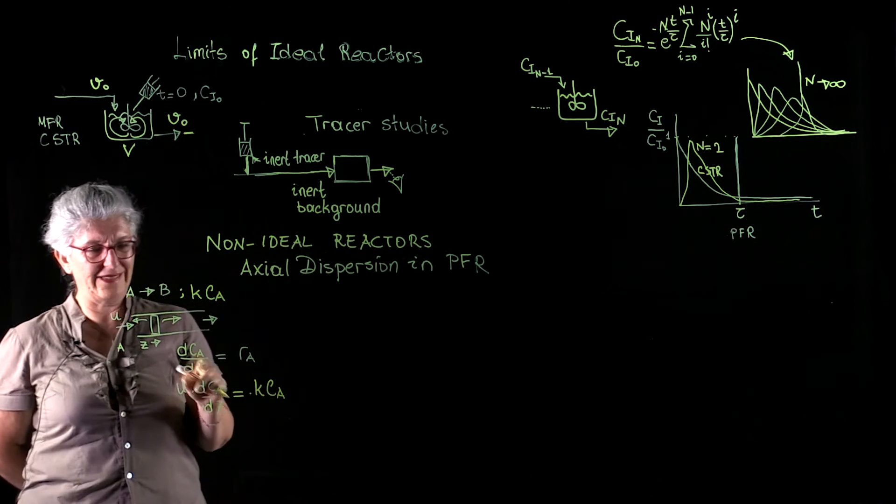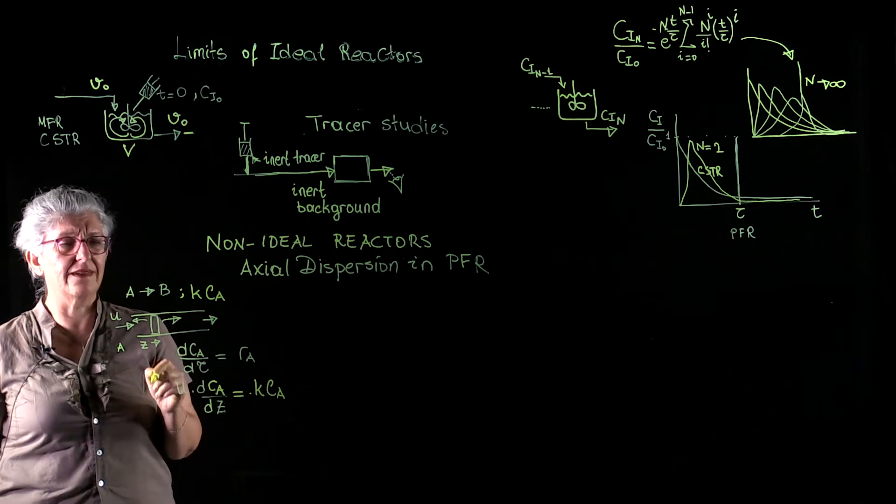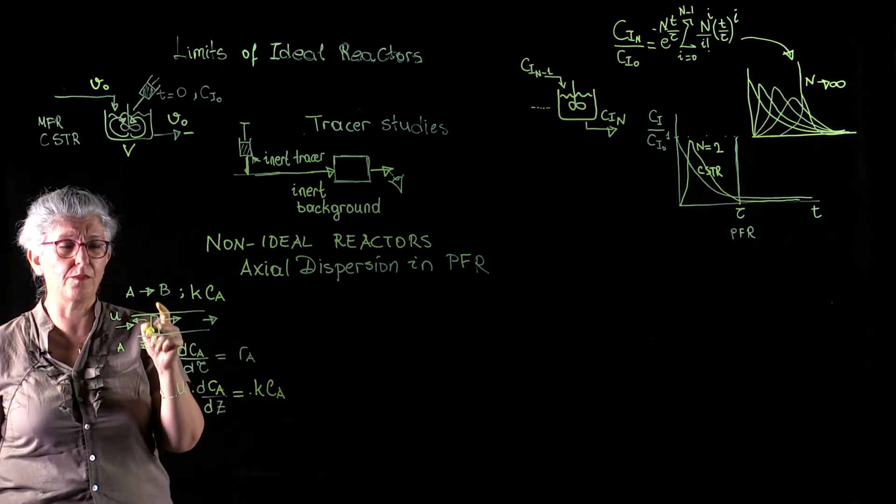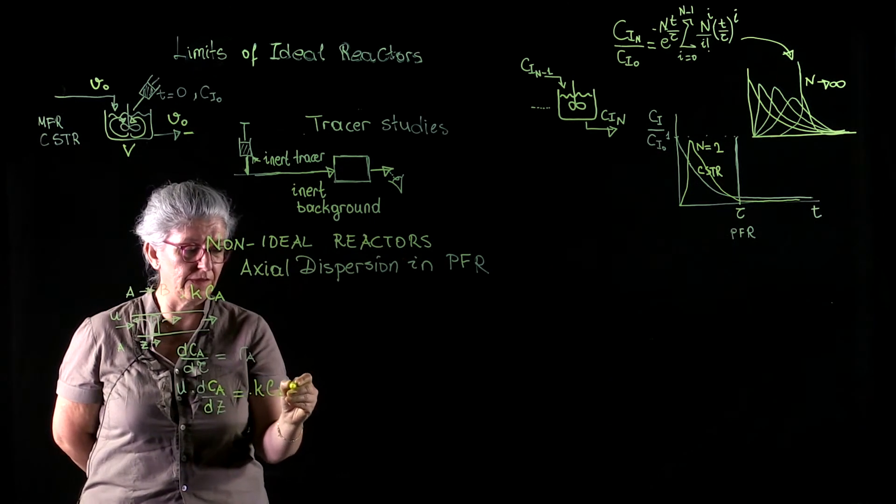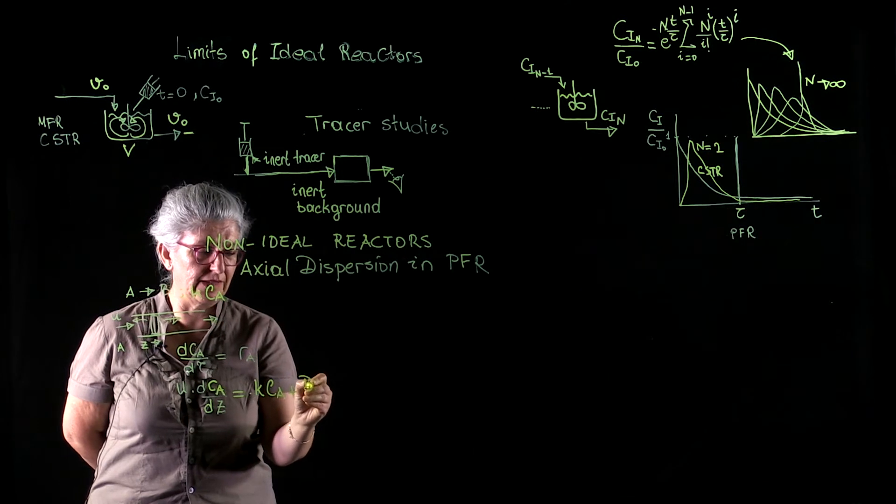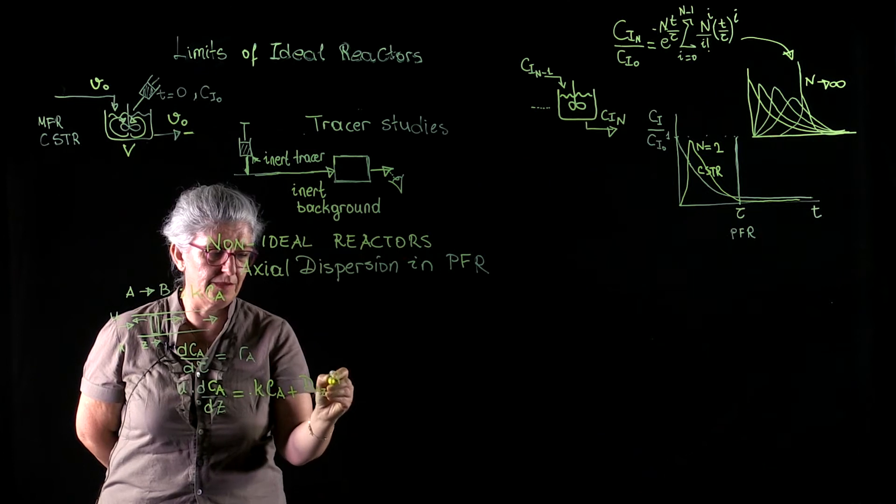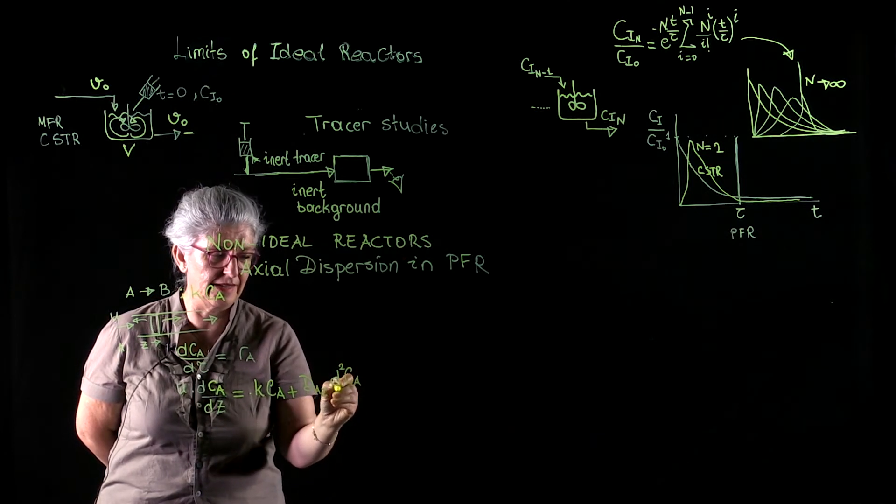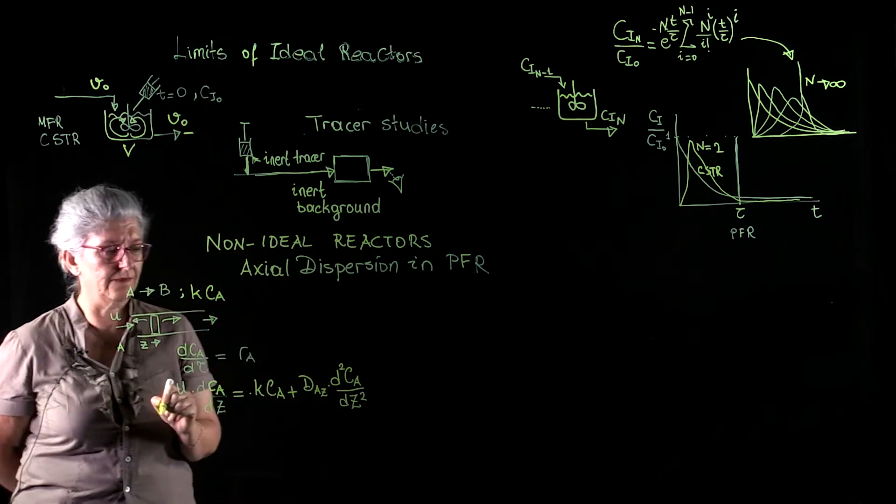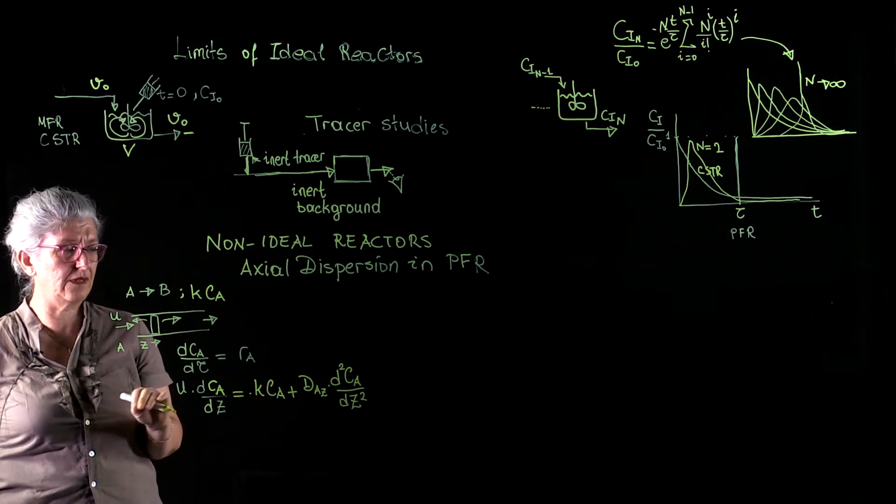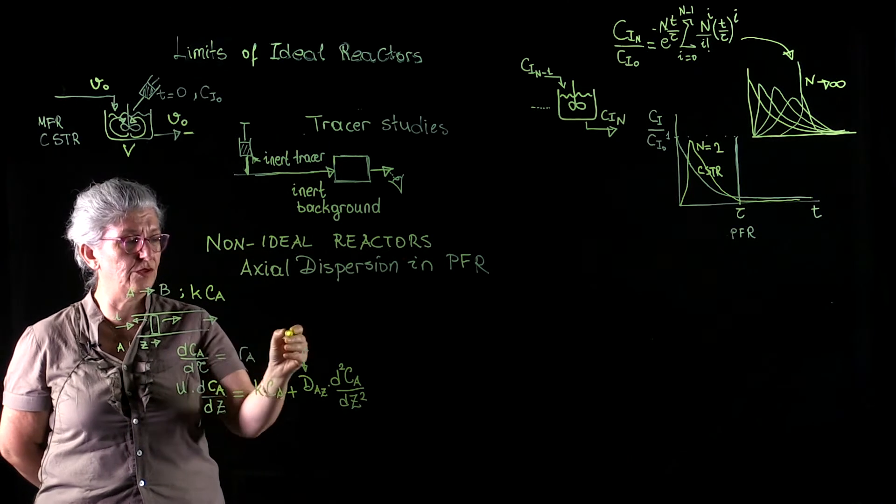But then our molecules are rushing away from our control volume because of diffusion. dAz times d squared Ca over dz squared. So this is the reaction diffusion equation. This dAz is the axial dispersion coefficient.